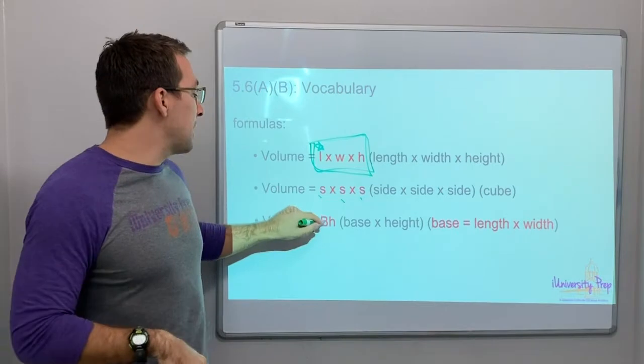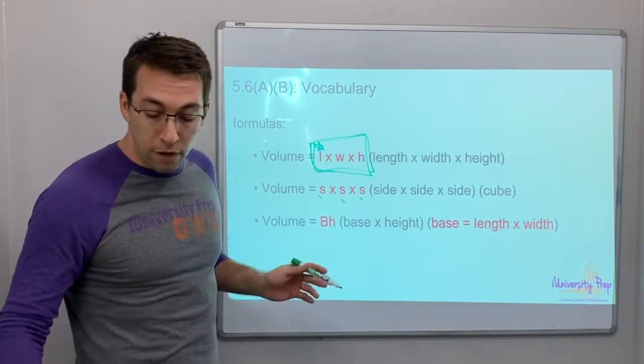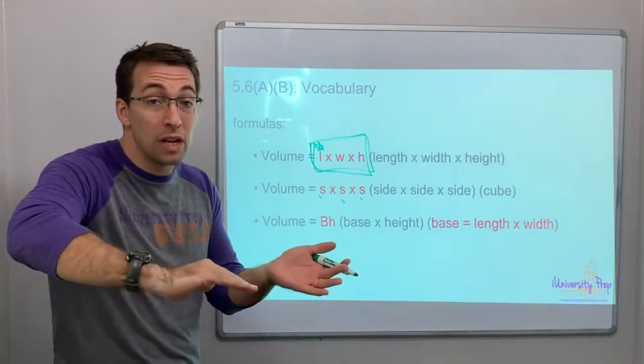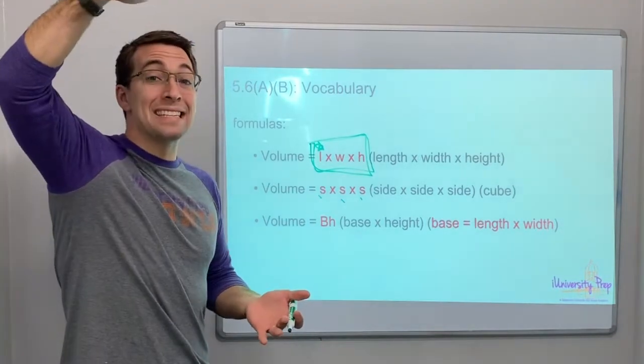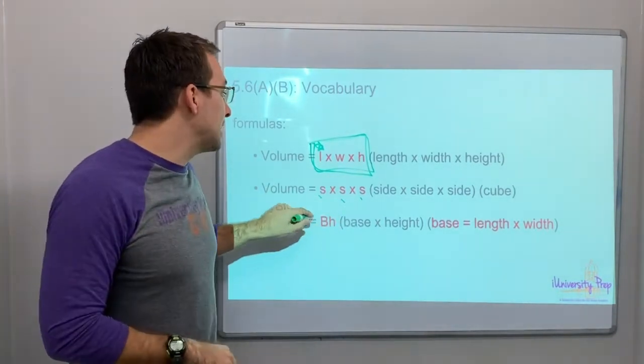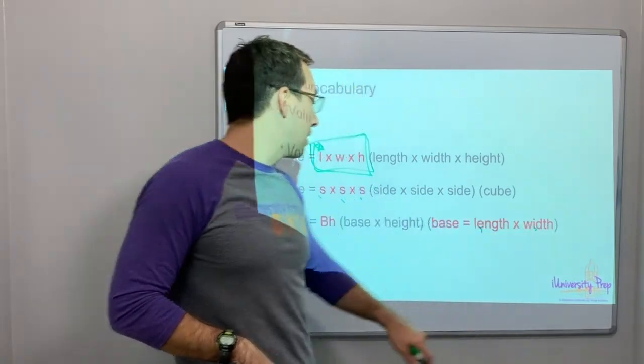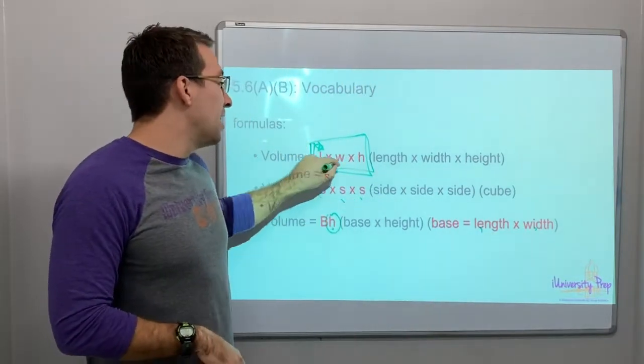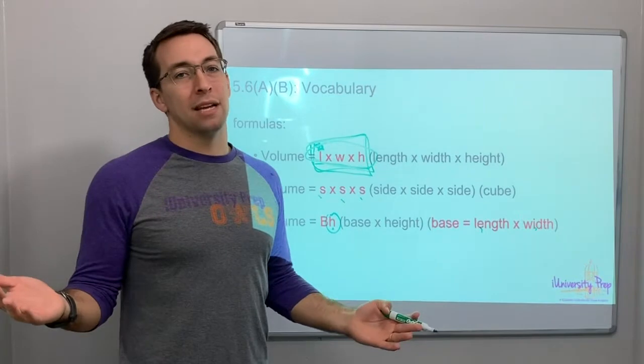And then volume is base times height. Well, if you have the base, that's the length times width, and then you have the height. Base equals length times width, and then here's the height. So everything always comes back to length times width times height.